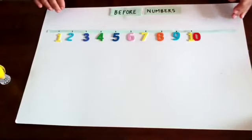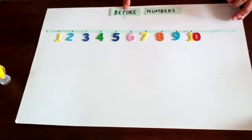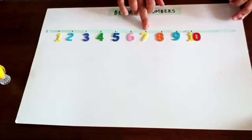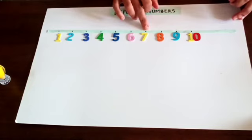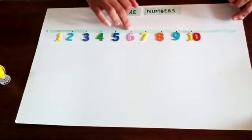Here is a number line from 1 to 10. We have to find the before number for a given number. If we are having 7 and we have to find what number is coming before 7, you have to jump one step backwards.